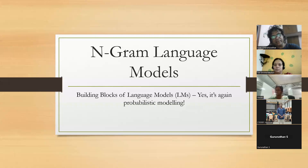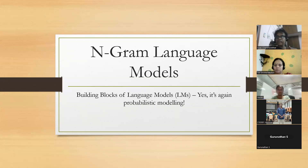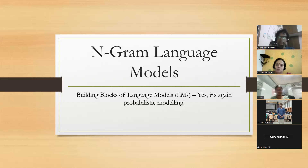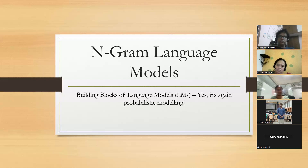I'm using the word 'classical' because — if you've learned physics, they say Newtonian physics is classical physics, before Einstein came and turned everything around. It's something similar. What you are going to learn today is the classical language model — the kind of stuff that people used to call a language model before the advent of large language models, which use neural networks extensively. The classical language model is not based on a neural network; it is all probabilistic modeling.